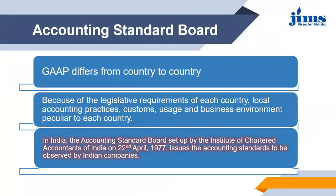Going further with the details of GAAP, each and every country has its own structure of GAAP, its own set of rules under GAAP. Because each and every country has its own local accounting practices, own customs, own business environment, and different features for running the business. Their requirements are different, their working culture is different, and their usage of accounting information might be different. So GAAP for every country is different depending upon the requirements that the country needs to fulfill.